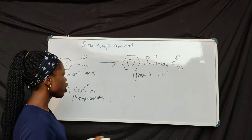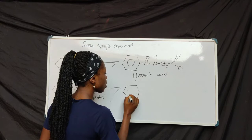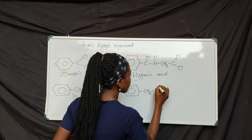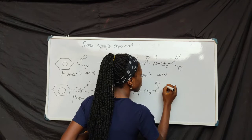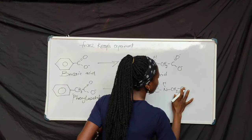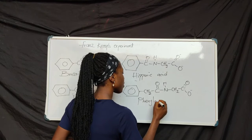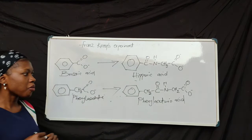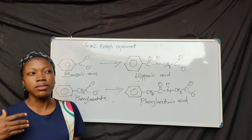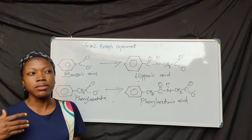In the urine of the dogs he fed with the even-numbered fatty acid, he observed phenylaceturic acid, which is the glycine conjugate of phenylacetate. From this experiment, Knoop revealed that the degradation of fatty acid occurred by the successive removal of two-carbon fragments, and this involves the oxidation of the beta-carbon to the carbonyl group.